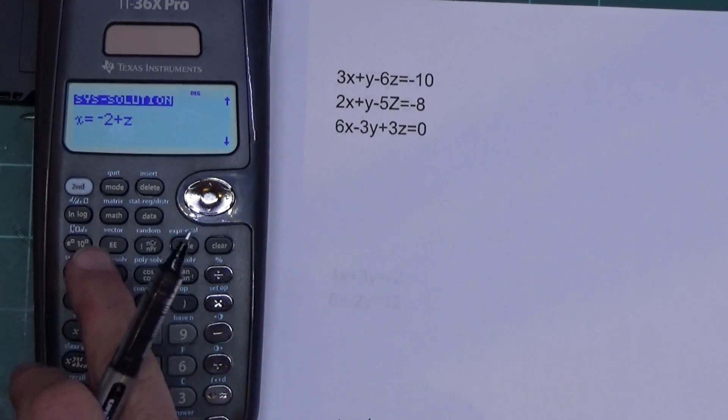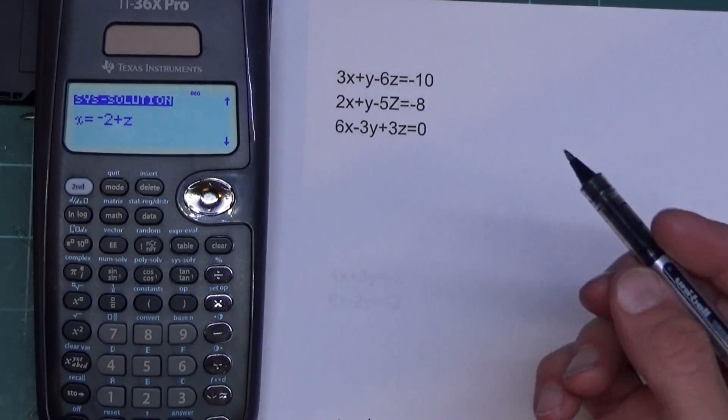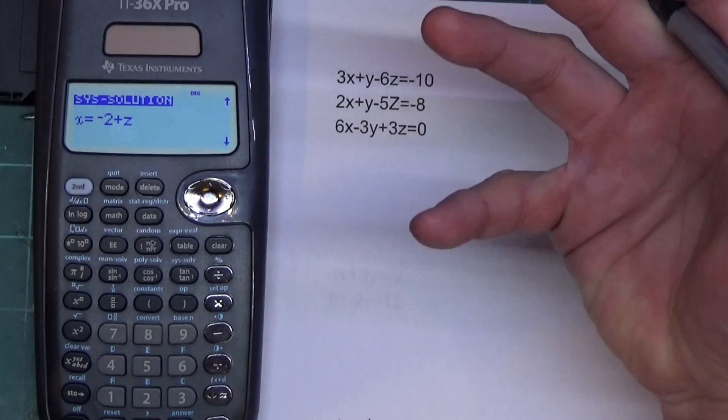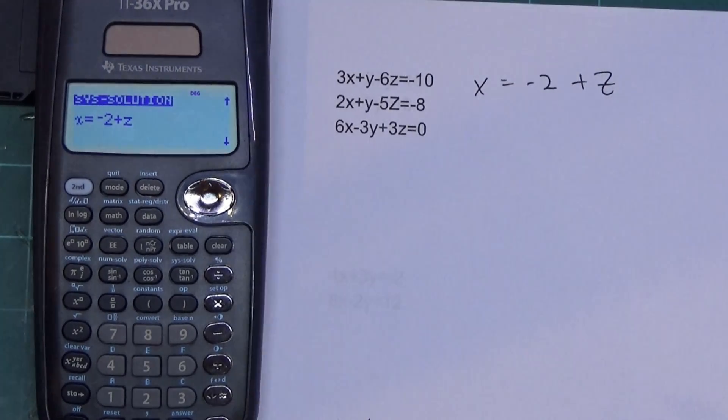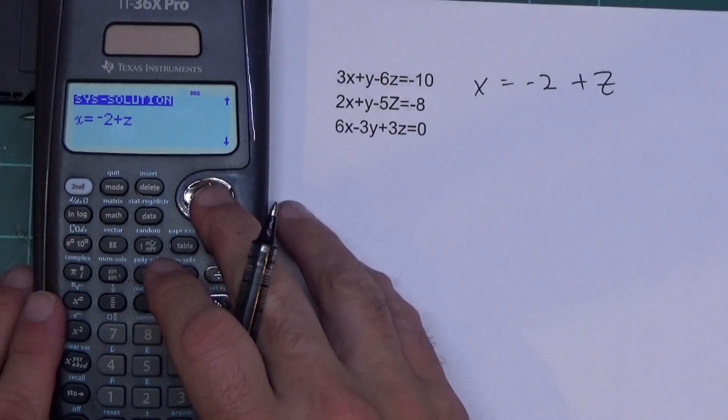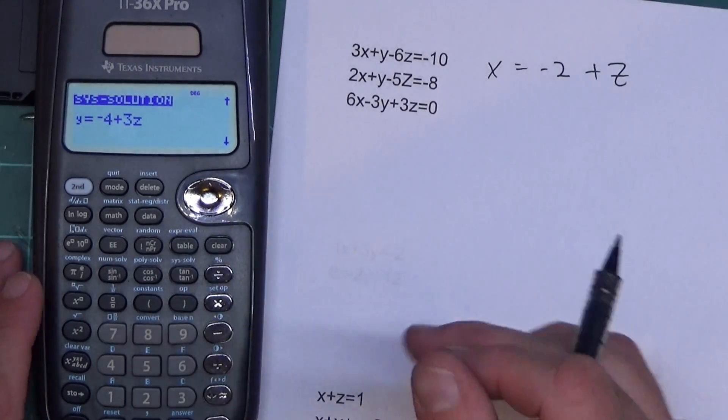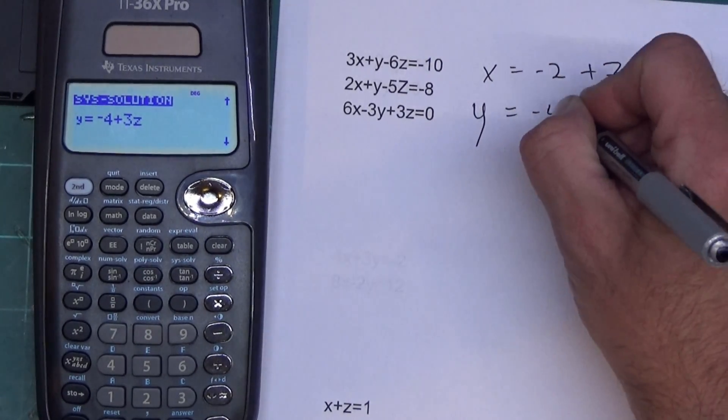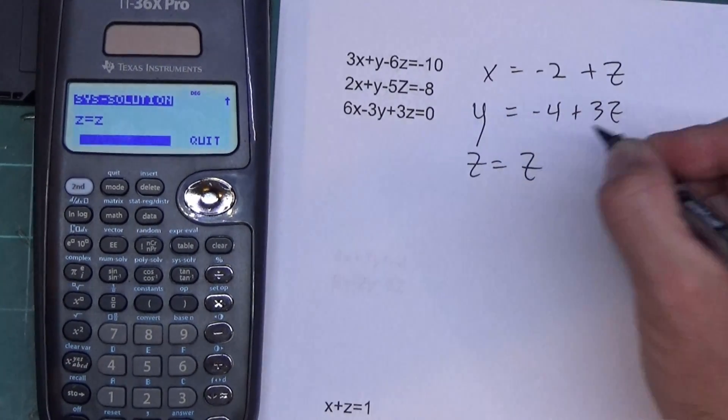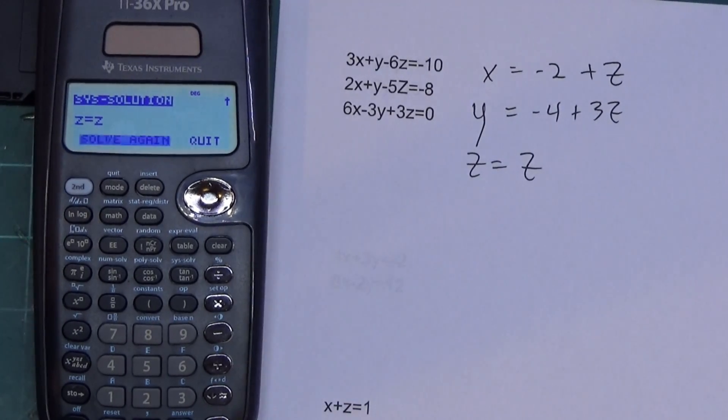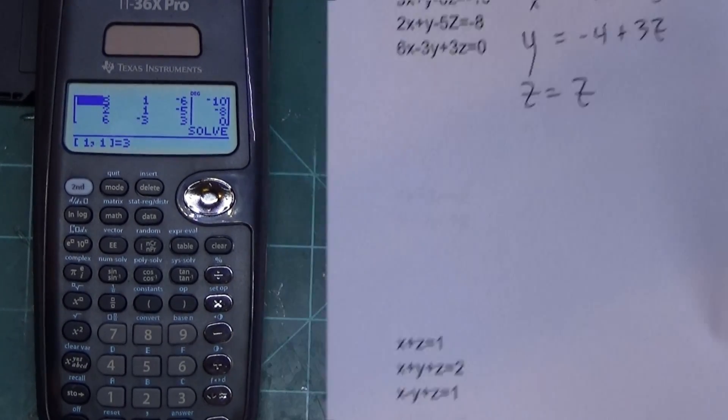On a 2 by 2, it won't do this. On the 2 by 2, it'll say infinite many solutions. But on a 3 by 3, it goes ahead and puts it in what's called parametric form. So it's telling me X is negative 2 plus Z. I actually like that. It's simplifying my life. I don't have to do as much work. If I did this with a matrix, I'd have to do some algebra to get this here. But this isn't a matrix, so I don't have to. Y equals negative 4 plus 3Z. And then down here, Z equals Z. So it's actually solving the parametric form for me, which makes my life really easy. I'm going to hit solve again because I got another one to solve.